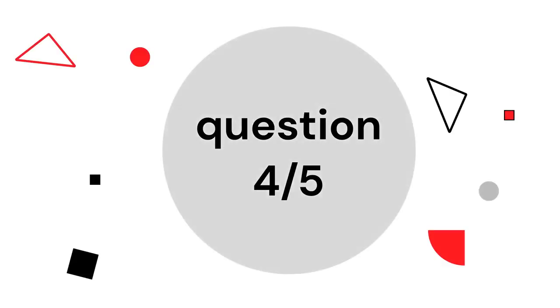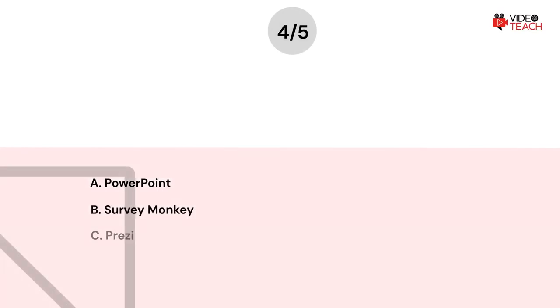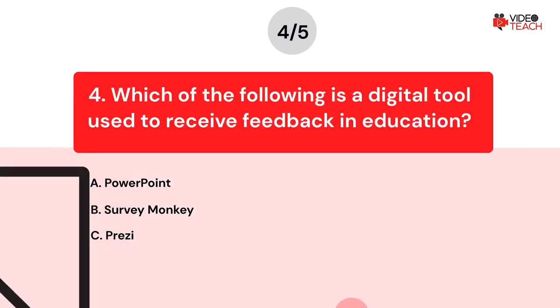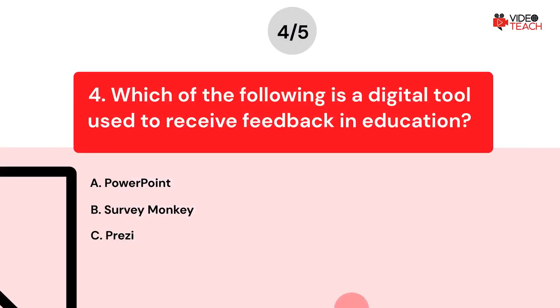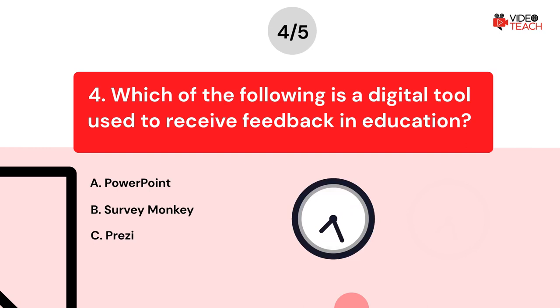Question number four. Which of the following is a digital tool used to receive feedback in education? Option A: PowerPoint. Option B: Survey Monkey. Option C: Prezi. Now you have about 15 seconds to think about your answer.